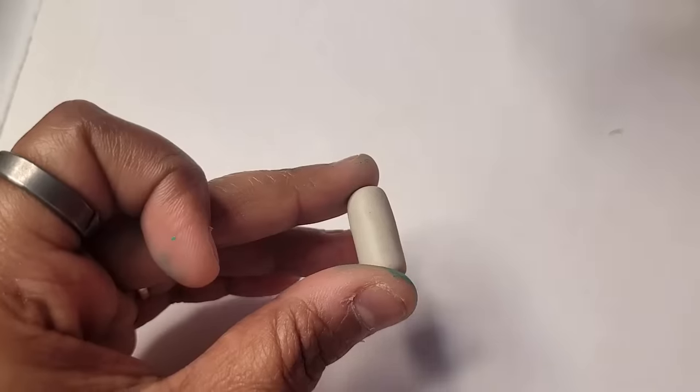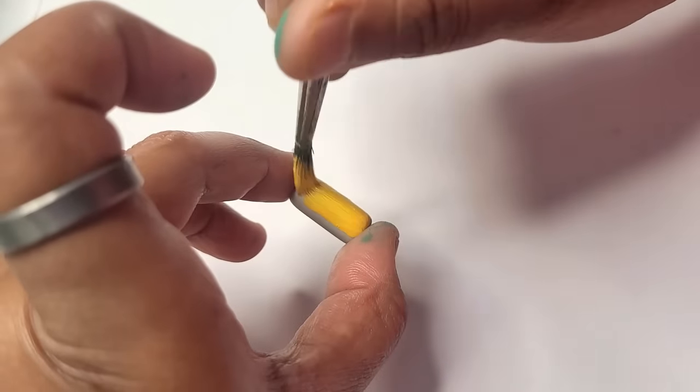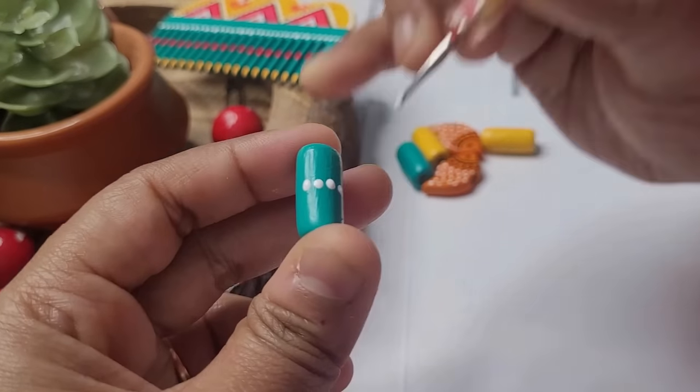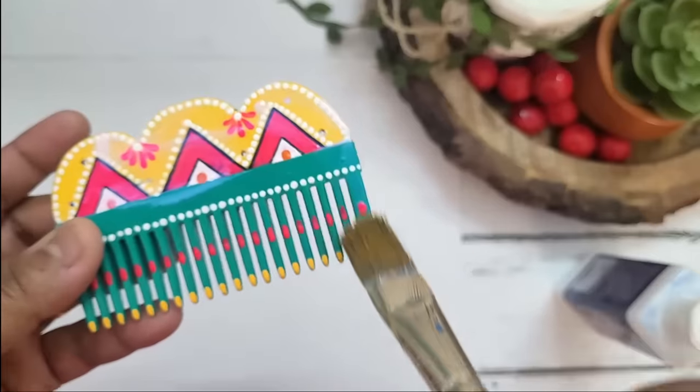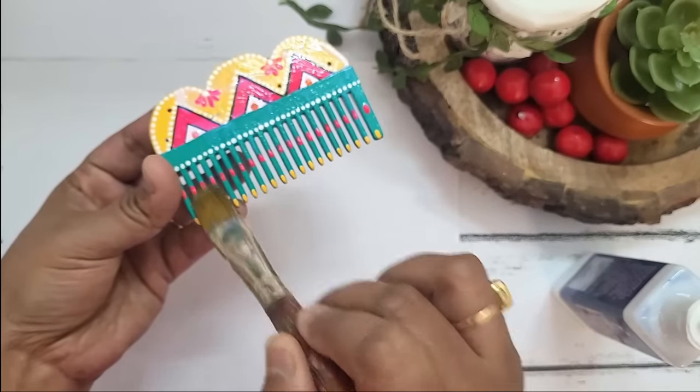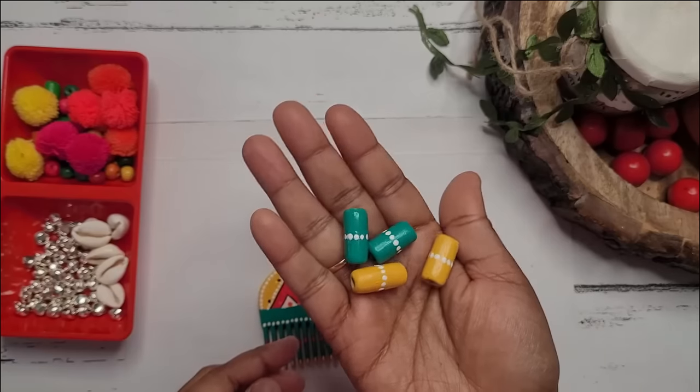Now applying different vibrant shades on the beads and I'm also decorating the beads using some dots as well. Applying gloss varnish to give the pendant a finished look. I have also applied varnish on the beads to give them a glossy finish.